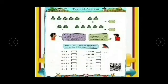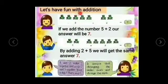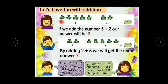Come to page number 20 of Maths textbook. Let's have fun with addition. Here there are 5 frogs. Let's count: 1, 2, 3, 4, 5. 2 more are there. So 5, 6, 7. 5 plus 2 is 7. If we add the number 5 plus 2, our answer will be 7.